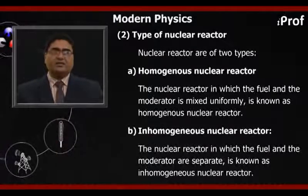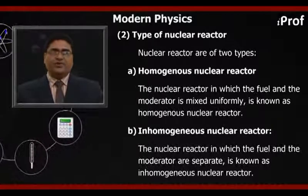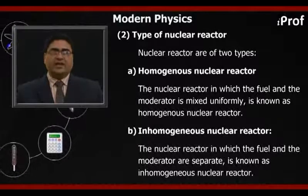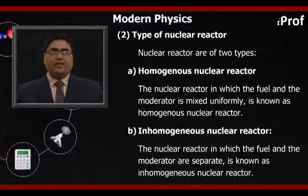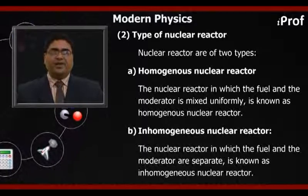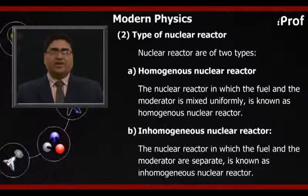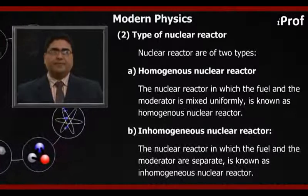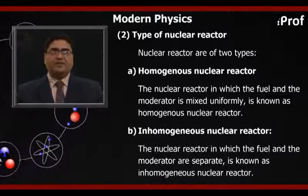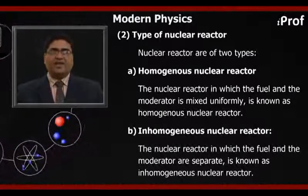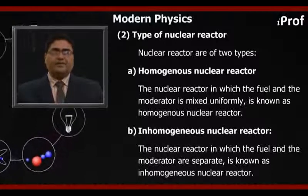Types of nuclear reactors: nuclear reactors are of two types. (a) Homogeneous nuclear reactor — the nuclear reactor in which the fuel and the moderator are mixed uniformly is known as a homogeneous nuclear reactor. (b) Inhomogeneous nuclear reactor — the nuclear reactor in which the fuel and the moderator are separate is known as an inhomogeneous nuclear reactor.